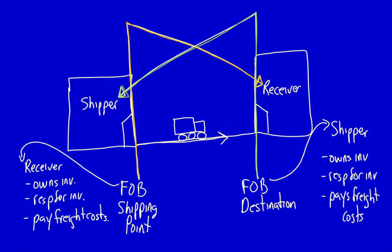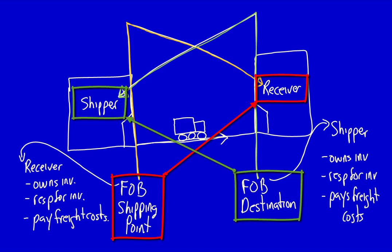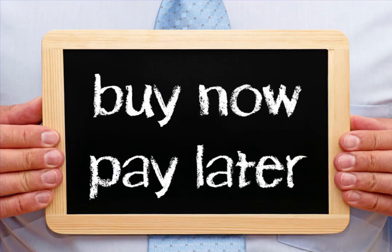So remember: FOB shipping point — it's the receiver's problem. FOB destination — it's all about the shipper. What about credit terms? That's what we're going to cover in our next video. Thank you.